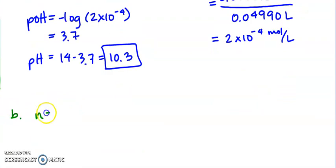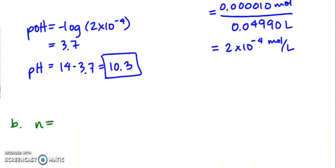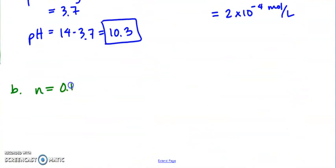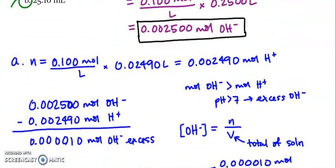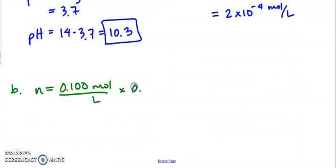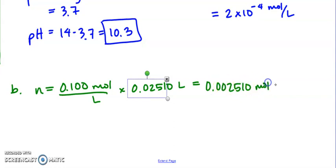So our moles are going to be our concentration, so 0.100 moles per liter times our volume, which is 25.10, so 0.02510. So this gives us 0.002510 moles of H plus.